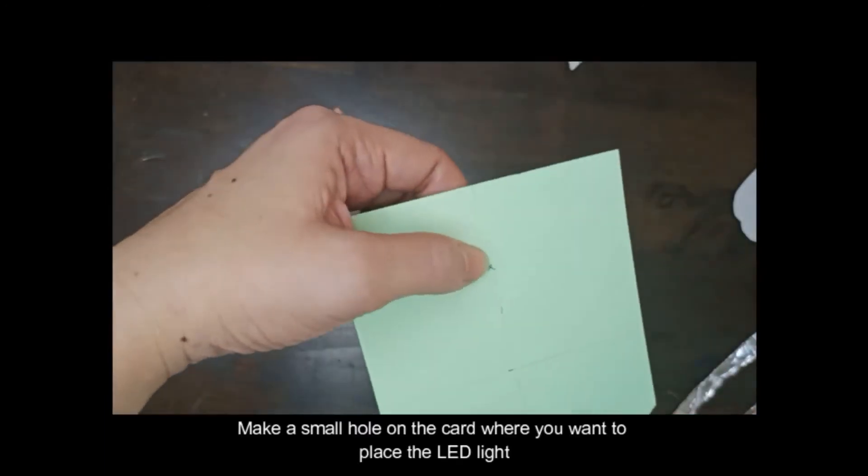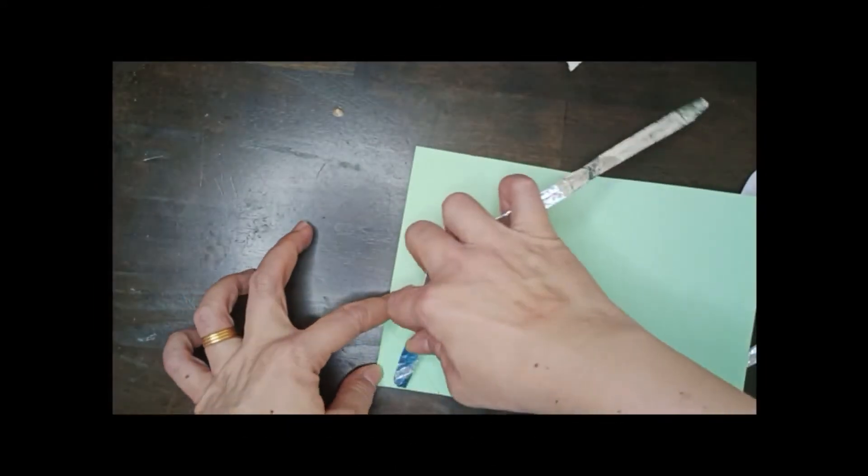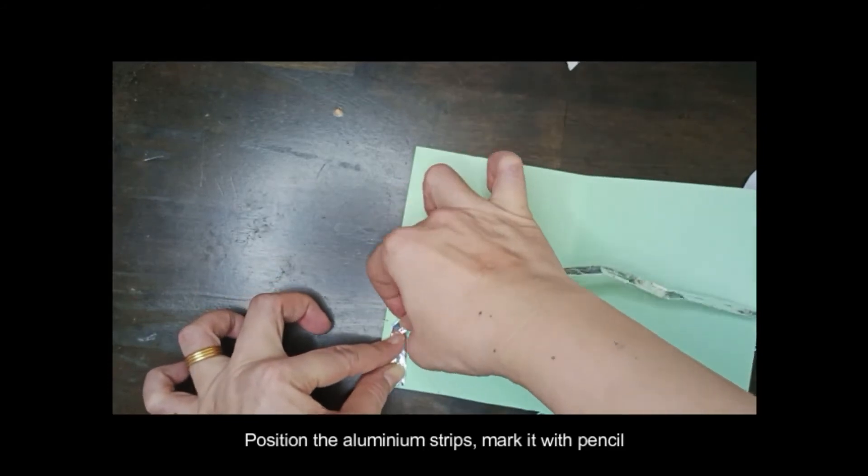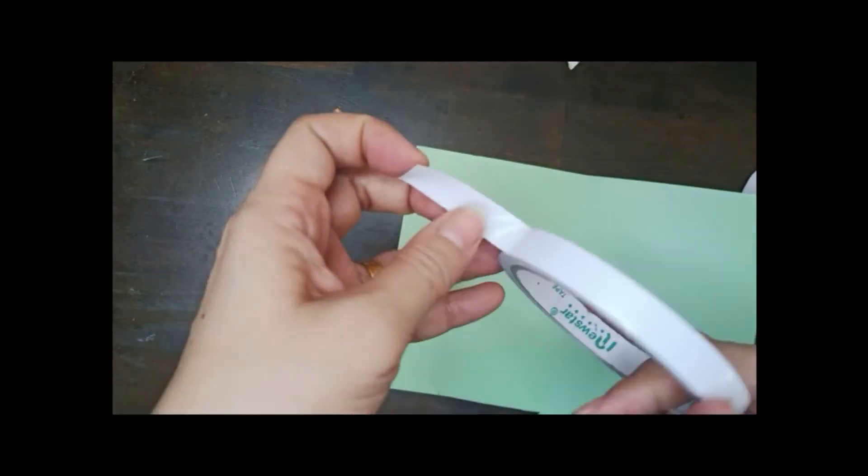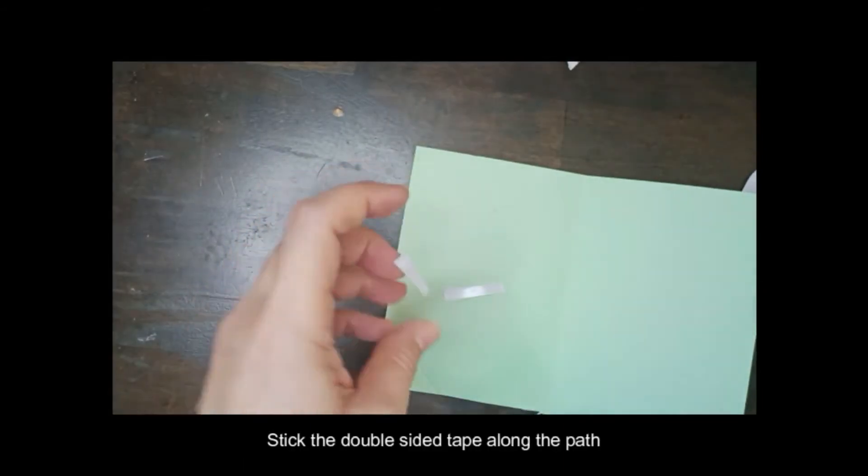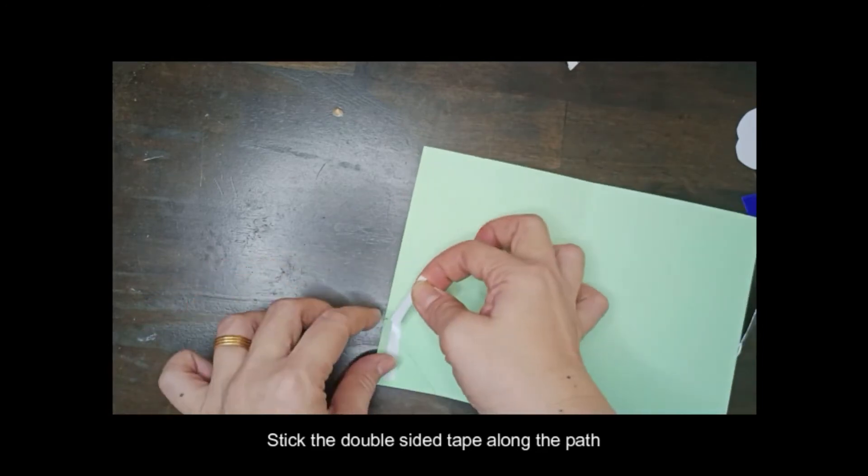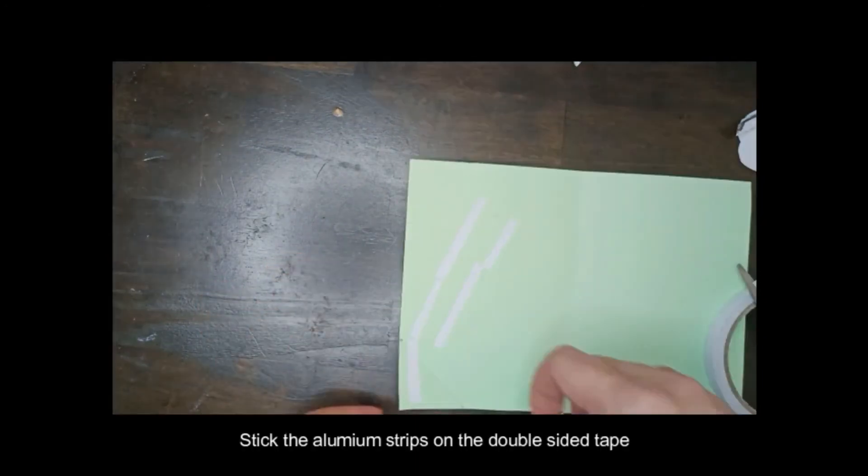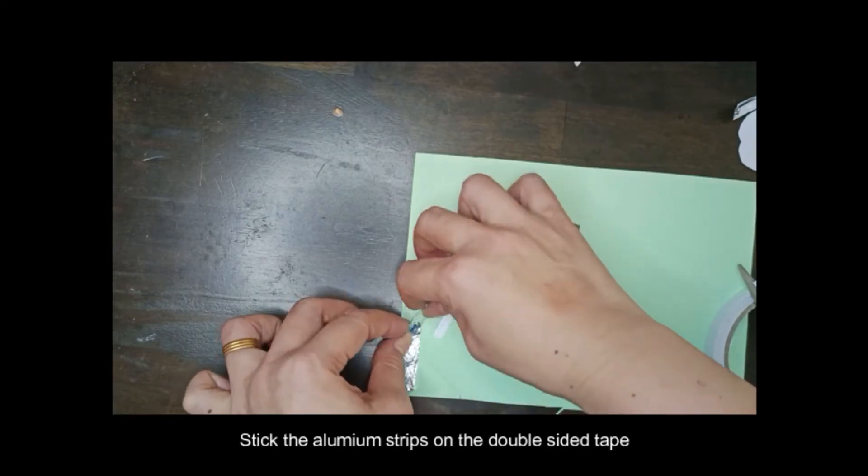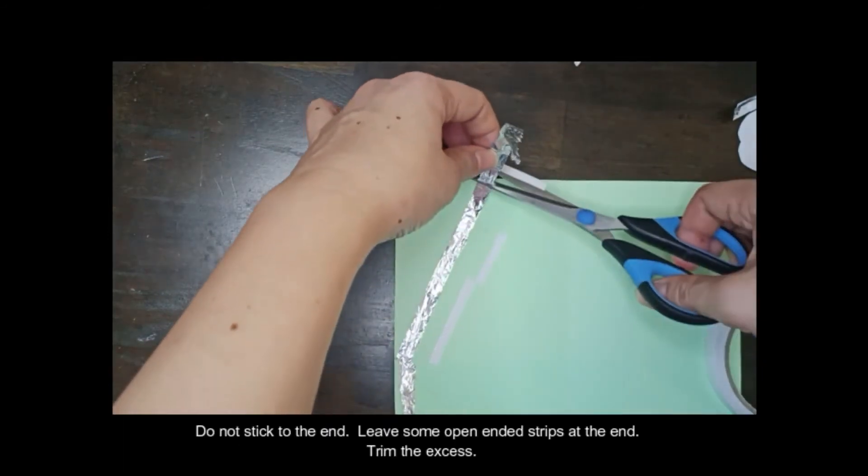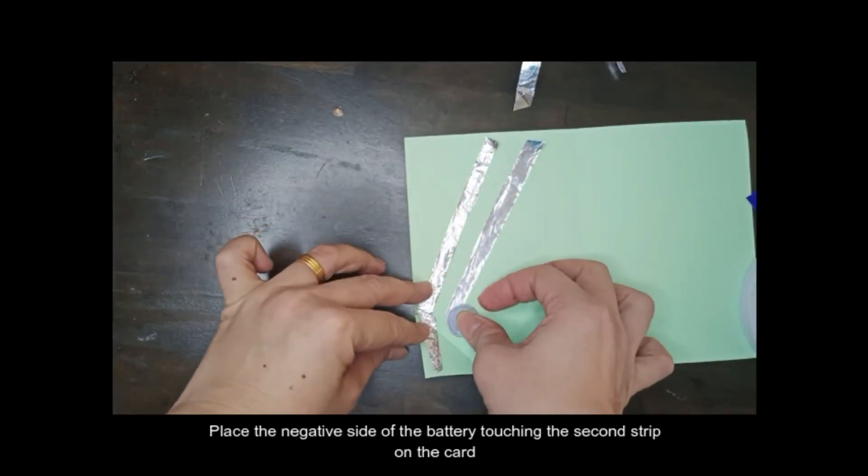Make a small hole on the card where you want to place the LED light. Position the aluminum strips, mark it with pencil, and then stick the double-sided tape along the path. Stick the aluminum strips on the double-sided tape. Do not stick to the end. Leave some open-ended strips at the end and then trim the excess.